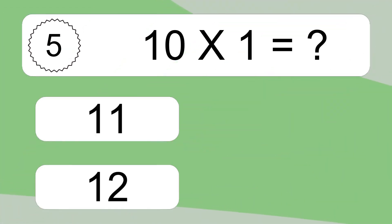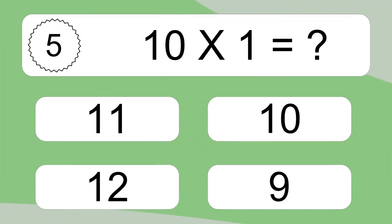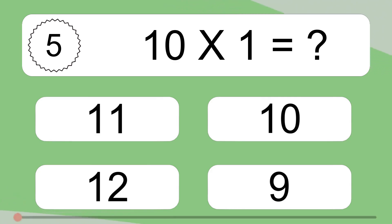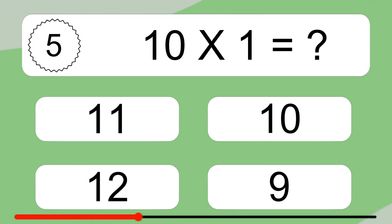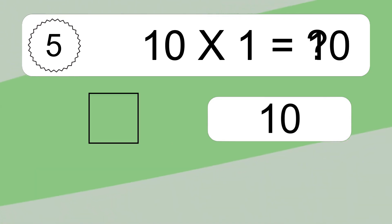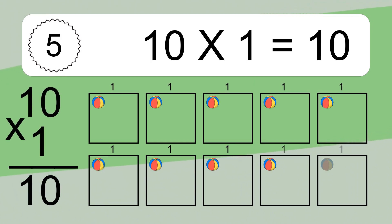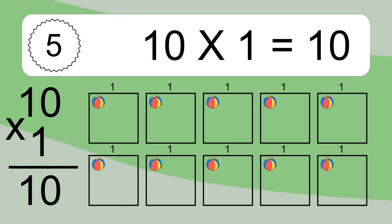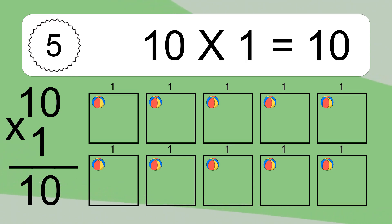10 times 1 equals what? 10 times 1 equals 10. We have 10 boxes, and each box has 1 colorful ball inside. If you count all the balls in all the boxes together, you will have 10 times 1 balls. This equals 10 balls.